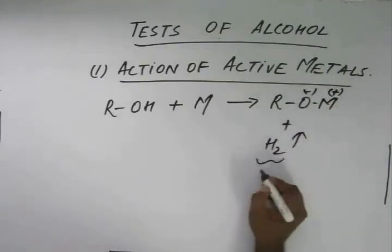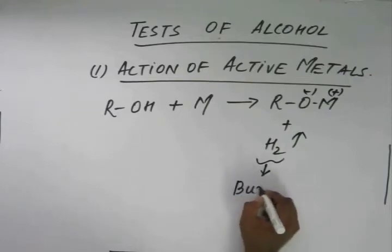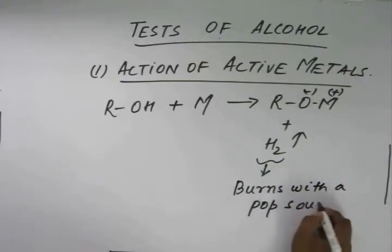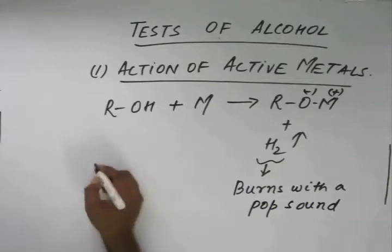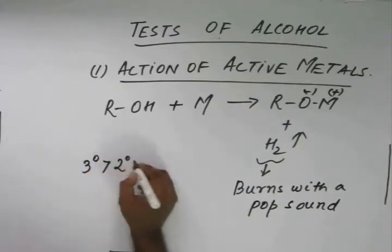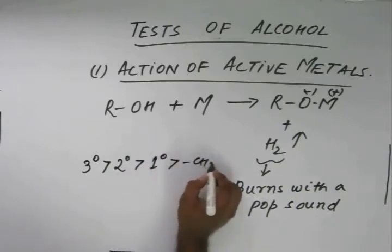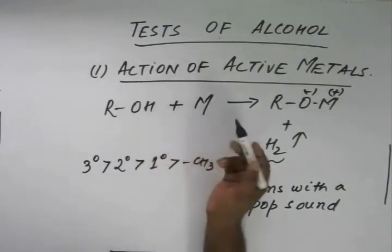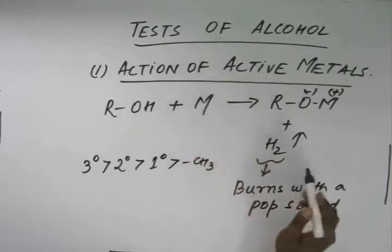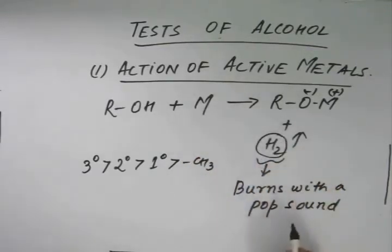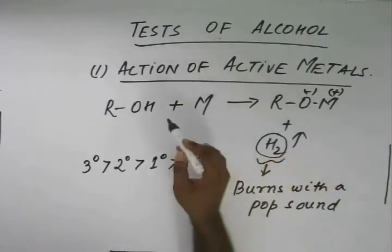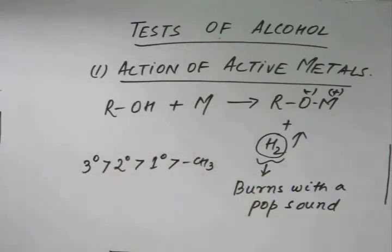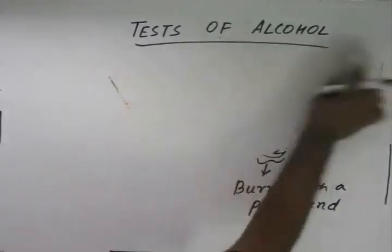This hydrogen gas burns with a pop sound. The order of reactivity is: 3° alcohol > 2° alcohol > 1° alcohol > methyl alcohol. In this reaction, this is a direct test of the presence of an acidic H in any compound. When this test gives a positive result — that is, when hydrogen gas is liberated — we know that the compound has acidic H in it. This is the first basic preliminary test of alcohol.